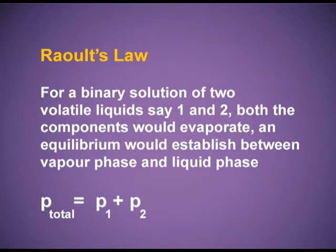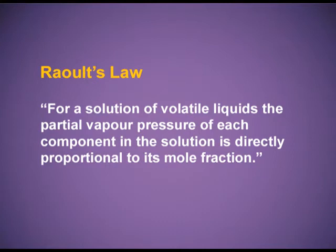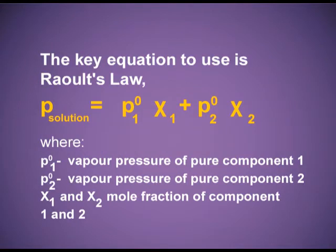Raoult's law states that for a binary solution of two volatile liquids (say 1 and 2), both components evaporate and an equilibrium establishes between vapour phase and liquid phase. The total pressure equals the sum of partial vapour pressures P1 and P2. For such a solution, Raoult's law states that the partial vapour pressure of each component is directly proportional to its mole fraction. Mathematically: P = P°₁x₁ + P°₂x₂, where P°₁ and P°₂ are vapour pressures of pure components 1 and 2, and x₁ and x₂ are their mole fractions.